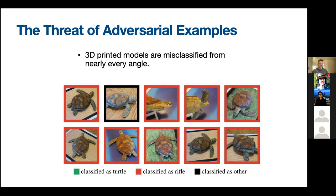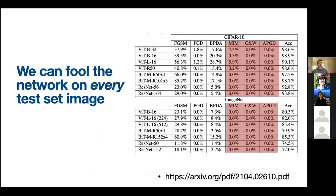In general, models aren't robust. A survey of very recent transformers and ResNet architectures shows that with stronger attacks we reach zero percent test set accuracy — meaning for CIFAR-10 and ImageNet, there isn't a single image in the test set that we can't force a misclassification for. This is both worrisome and very pervasive. If you want to deploy in autonomous driving or medical image classification, you really need to ensure your model is not making costly errors.